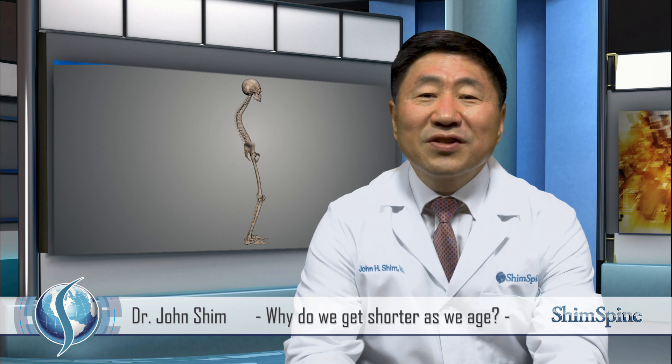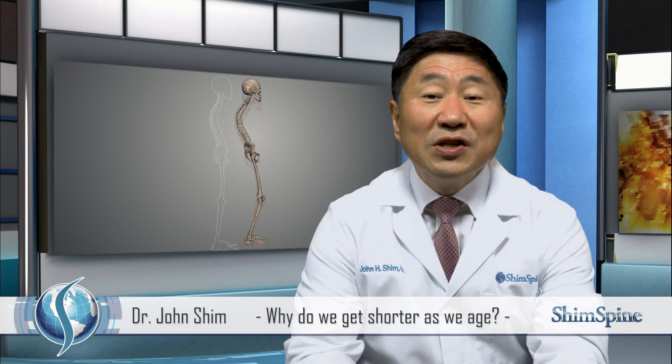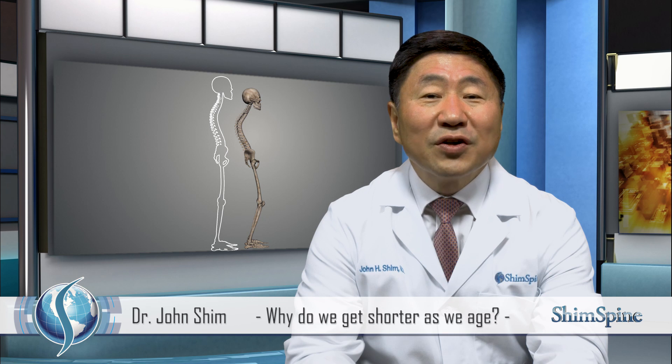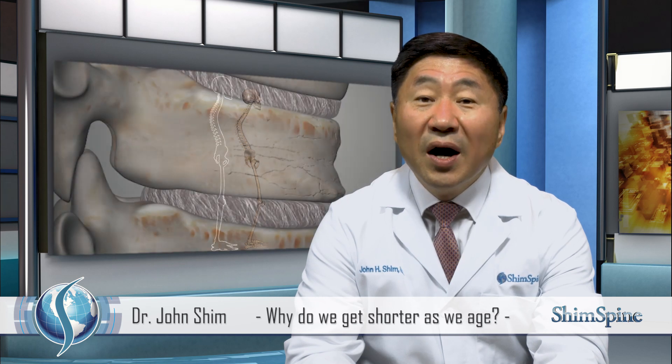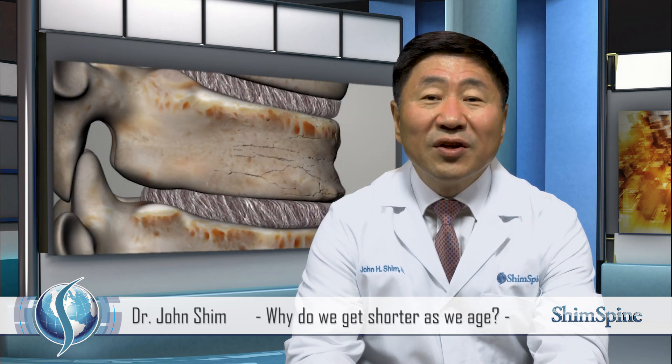As you now understand, the disc degeneration process leads to shrinkage or shortening by both a reduction in disc height and a change in posture to achieve a balanced position. Osteoporosis can make a significant impact on height. There are other factors that can contribute to shrinkage, like loss of cartilage height in our hips and knees or falling of our arches in our feet. But as a spine surgeon and specialist, I can say the most significant factor causing age-related shrinkage is your spine. I hope you have a better understanding of this process. This is Dr. John Shim, and I want to thank you for your attention.